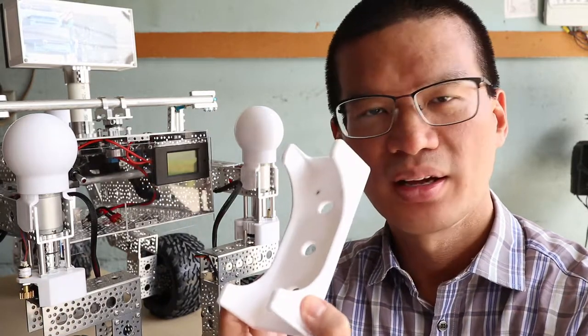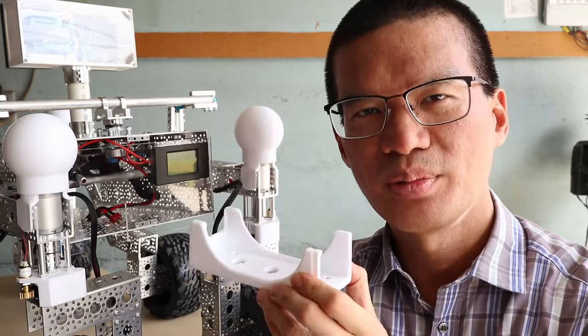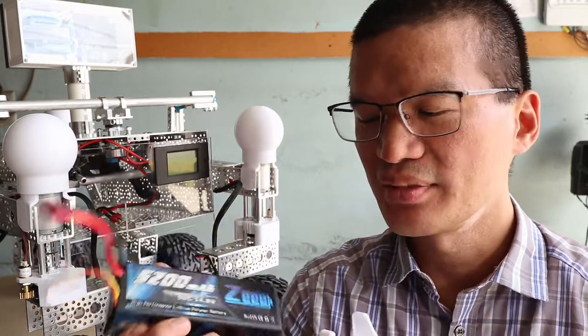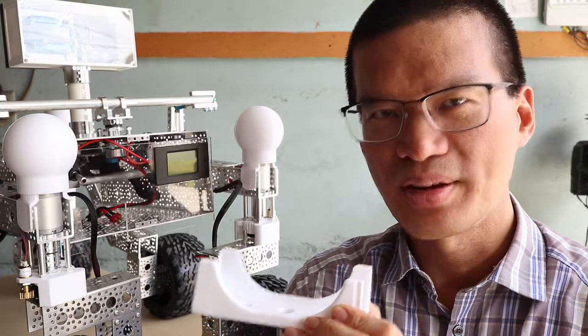This video explains and demonstrates a custom battery tray for the JPL open-source rover for using 4-cell lithium polymer battery packs.